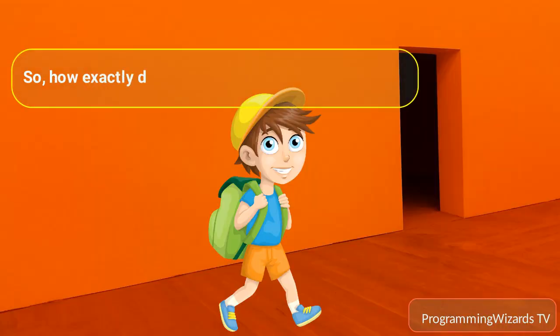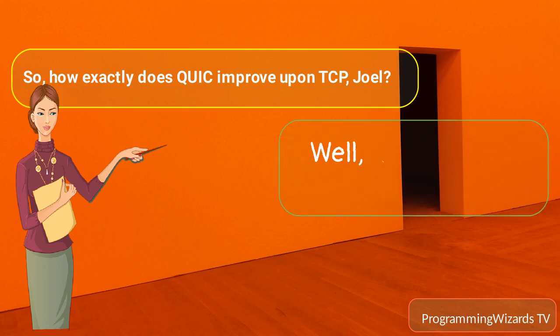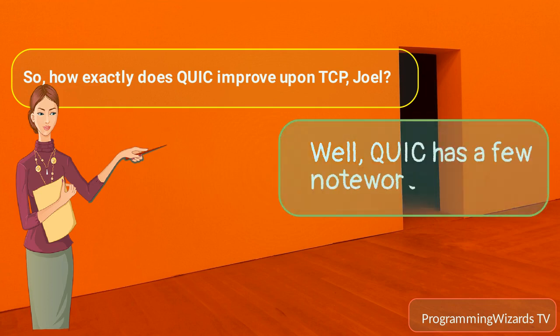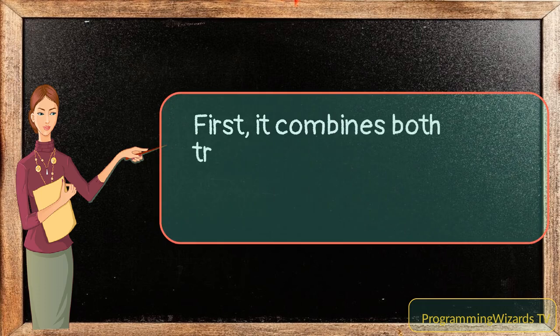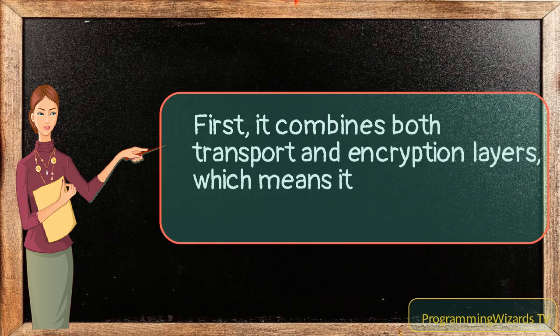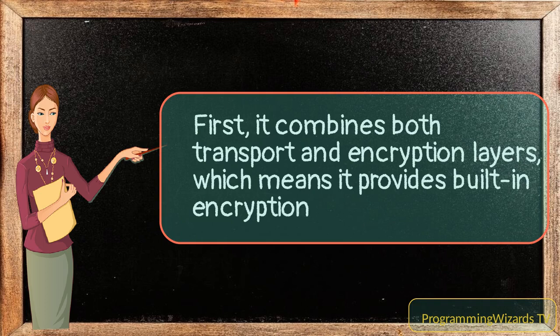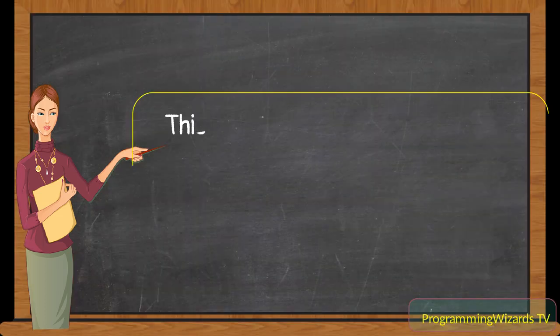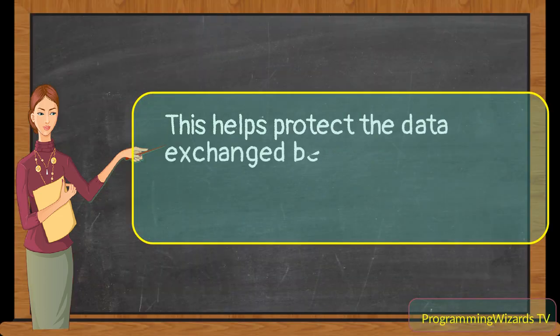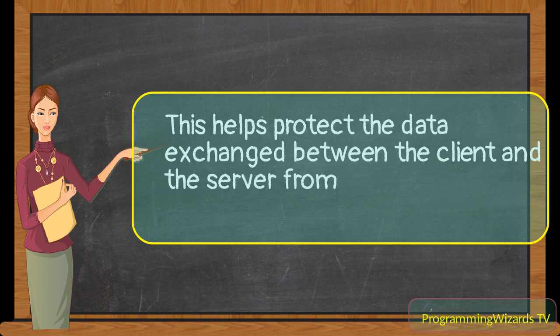So how exactly does QUIC improve upon TCP, Joel? Well, QUIC has a few noteworthy features. First, it combines both transport and encryption layers, which means it provides built-in encryption by default. This helps protect the data exchanged between the client and the server from eavesdropping and tampering.